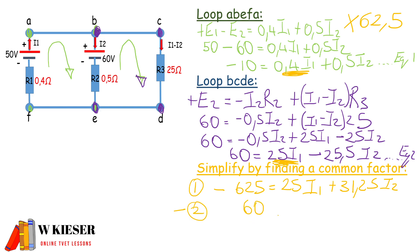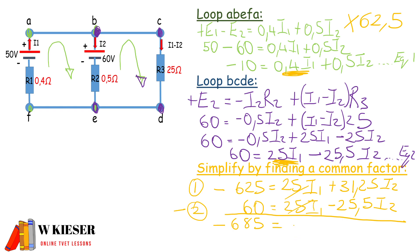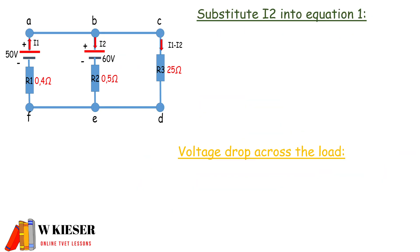Subtracting equation two from the multiplied equation one: minus 625 minus 60 gives minus 685. The 25·I1 terms cancel, and the I2 terms combine to give 56.75·I2. Therefore I2 equals minus 12.07 amps.